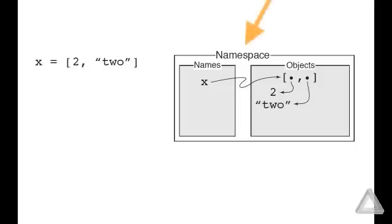On the right is a depiction of the namespace. There is x as an identifier and it's associated with the container, the list that has two elements. And those two elements are the integer 2 and the string TWO. But really anything could be occupying one of the elements of the list.